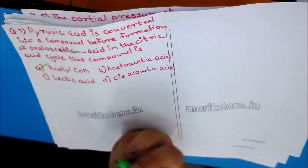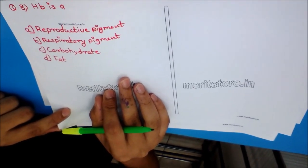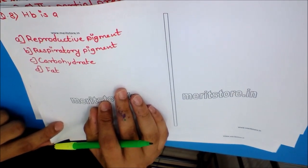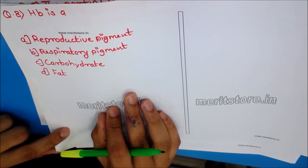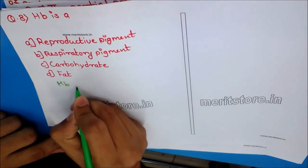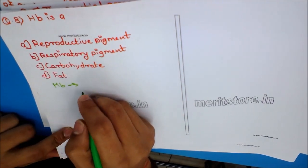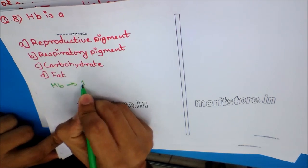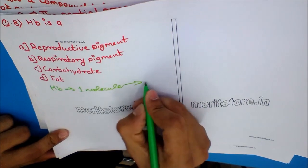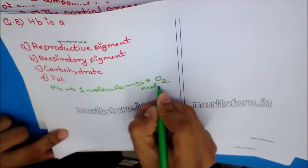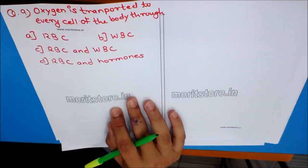Question 8: Hemoglobin (Hb) is? Options: A) Reproductive pigment, B) Respiratory pigment, C) Carbohydrate, D) Fat. Hemoglobin is the respiratory pigment which has the capacity of combining with oxygen molecules to form oxyhemoglobin. Each molecule of hemoglobin can combine with four oxygen molecules. The answer is option B — respiratory pigment.